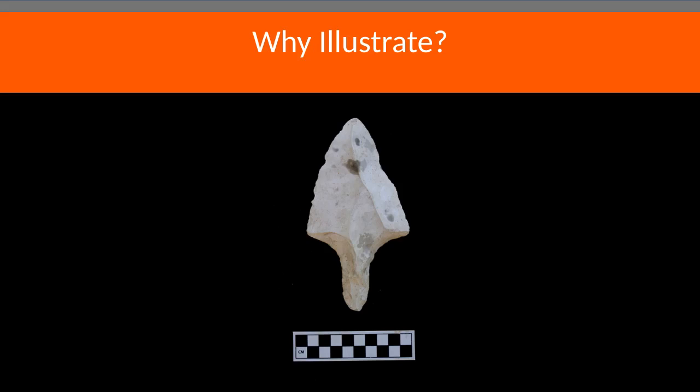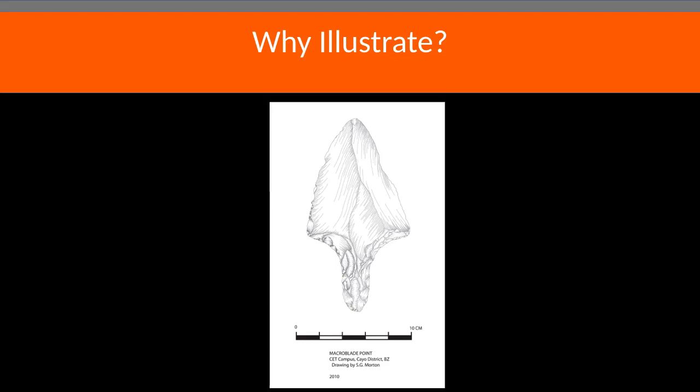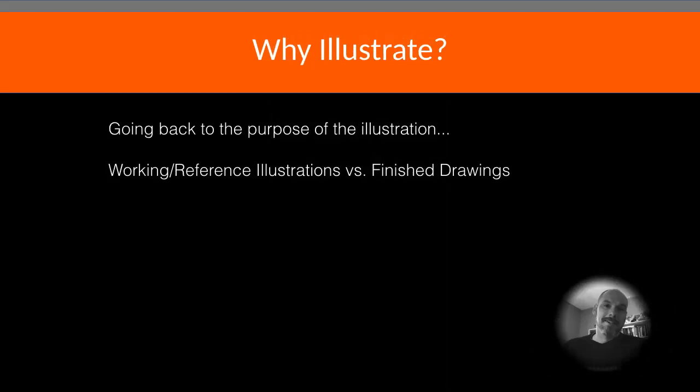Similarly, in the case of a stone point — perhaps once used as a knife, found on the campus of Set in San Ignacio — while the photo conveys the qualities of the material and general shape, there's a lot of other information not visible. With the drawing, however, we were able to highlight each scar showing where and in which direction an ancient Maya stoneworker removed material to make this beautiful object. It carries a lot of information.